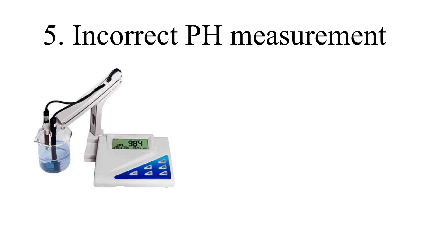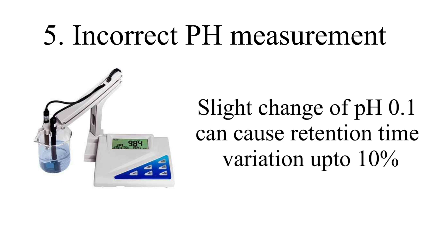Number 5: Incorrect pH measurement of the mobile phase. Control of the pH of the mobile phase is very important. A slight change as little as 0.1 pH can result in retention time variation of 10%. It's very important to measure the pH of the mobile phase accurately, and make sure that whatever pH meter is being used is always in a calibrated state.